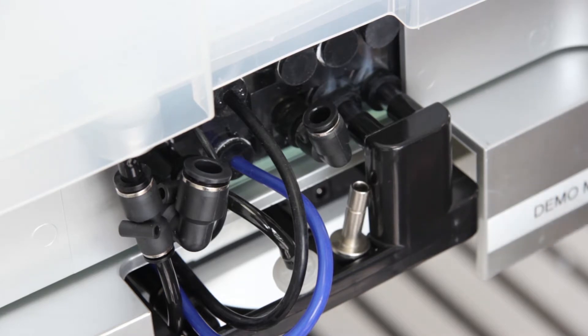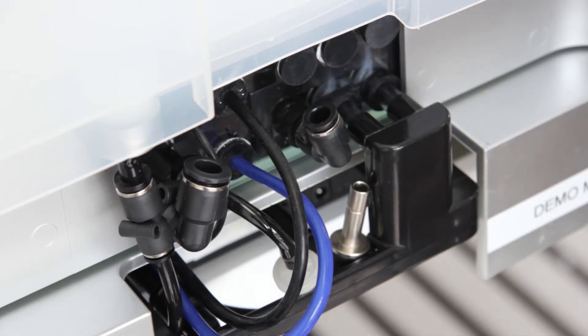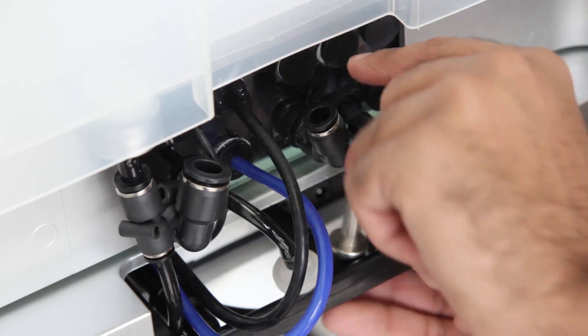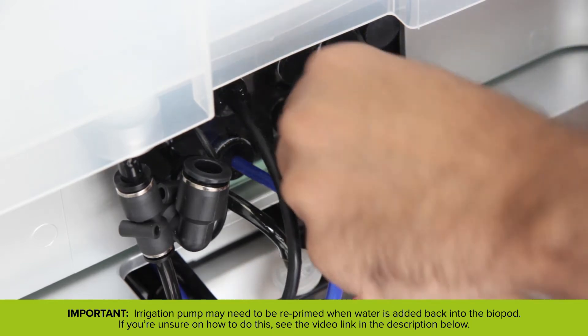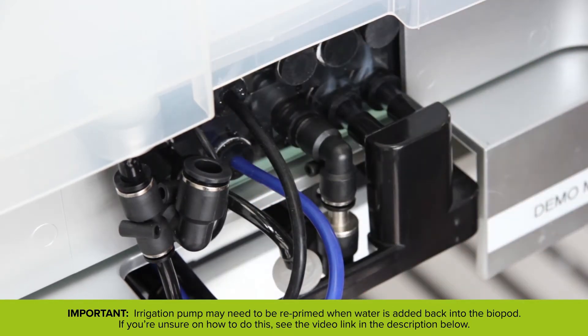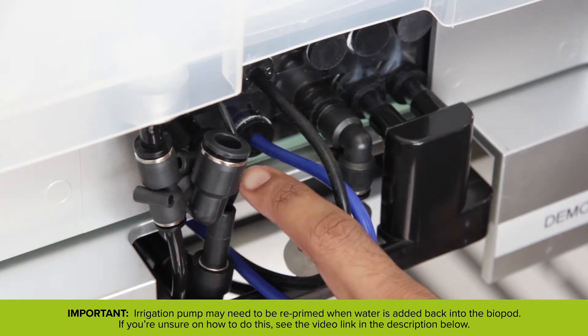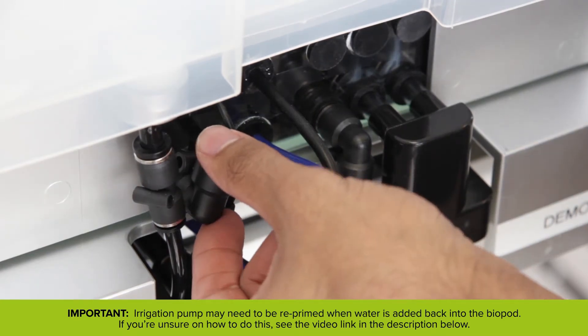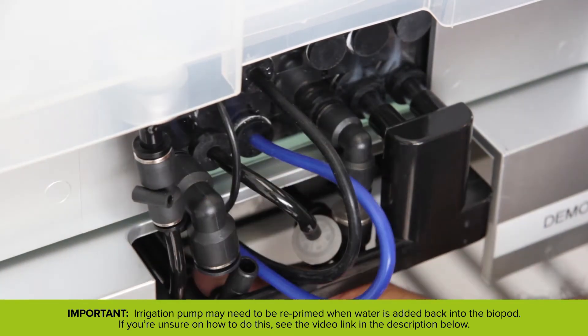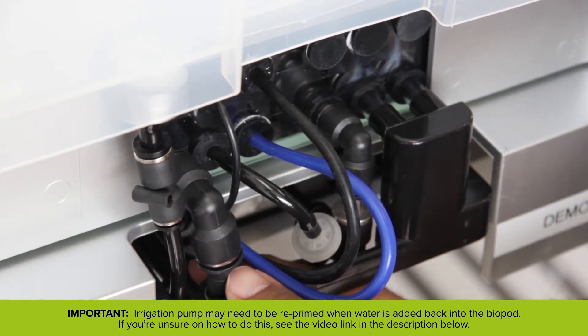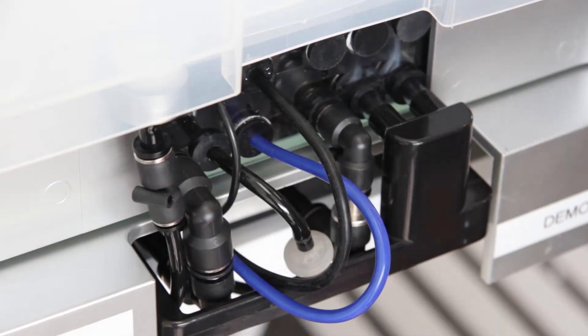Now we have to reinsert these two valves back into their respective fittings. Start off with this one right here. Turn the valve back down, find the insertion point, and push it all the way back in. The final step is to reinsert this fitting into this valve. Turn the valve back around down, then push it back into this insertion point.